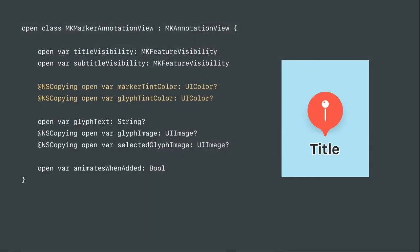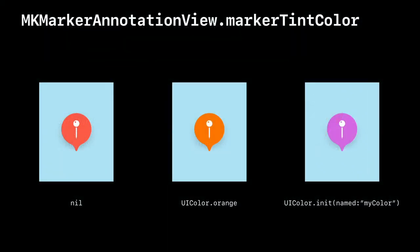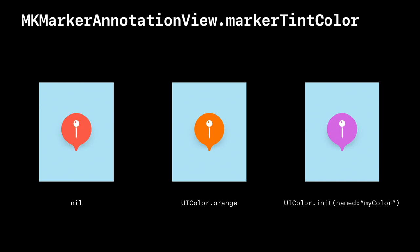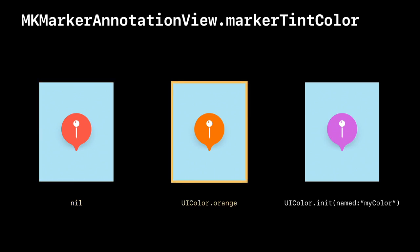Next, you can configure the markers themselves with color. There's a marker tint color — the color of the marker itself — and a glyph tint color. The marker tint color is a UIColor. The default nil value picks a system default, currently a slightly reddish color, but you can set it to any color you want, such as orange. Note we call it marker tint color because the color you provide may not be the exact color used — we may apply visual effects to make it look nicer. You can also use iOS asset catalog named colors.